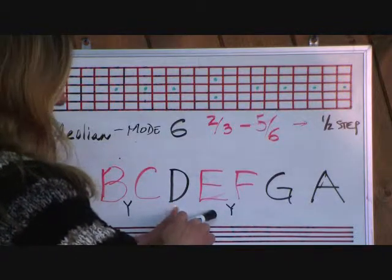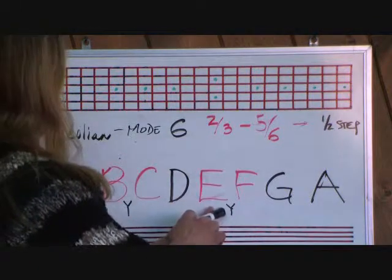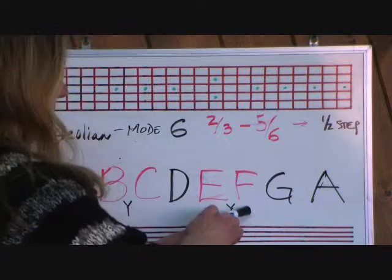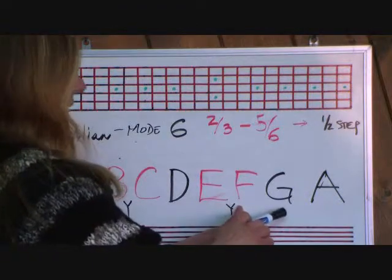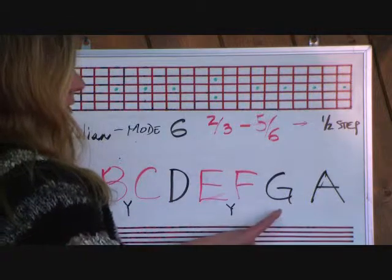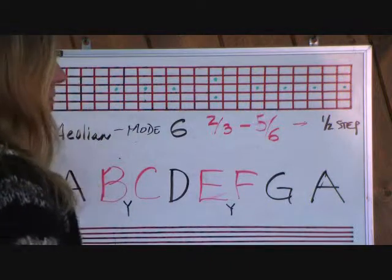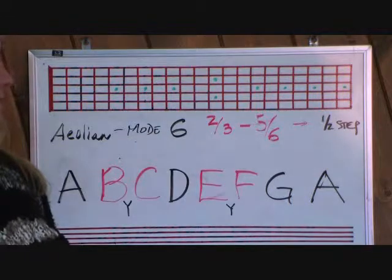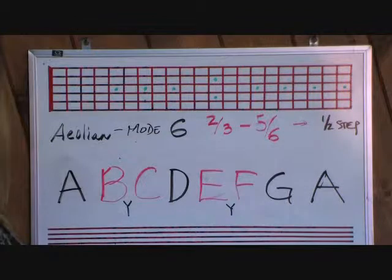D to E needs to be a whole step — it is a whole step, you don't need to do anything. The fifth to sixth step, E to F, needs to be a half step, and it already is, so we move on. F to G is a whole step, so leave that alone. G to A, the seventh step, is a full step, so you don't need to apply any sharps or flats. That makes it a natural minor, or pure minor scale.